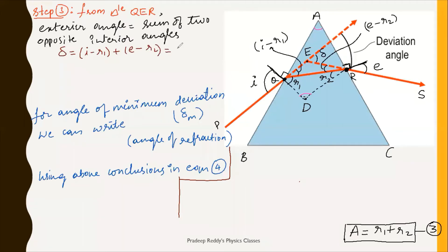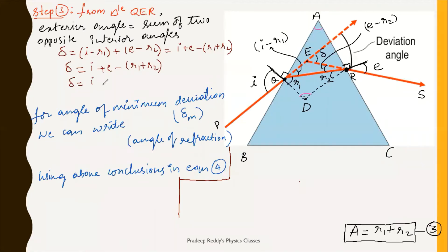This gives us delta equals i plus e minus (r1 plus r2). From equation three, r1 plus r2 equals A, so delta equals i plus e minus A. This is equation number four.